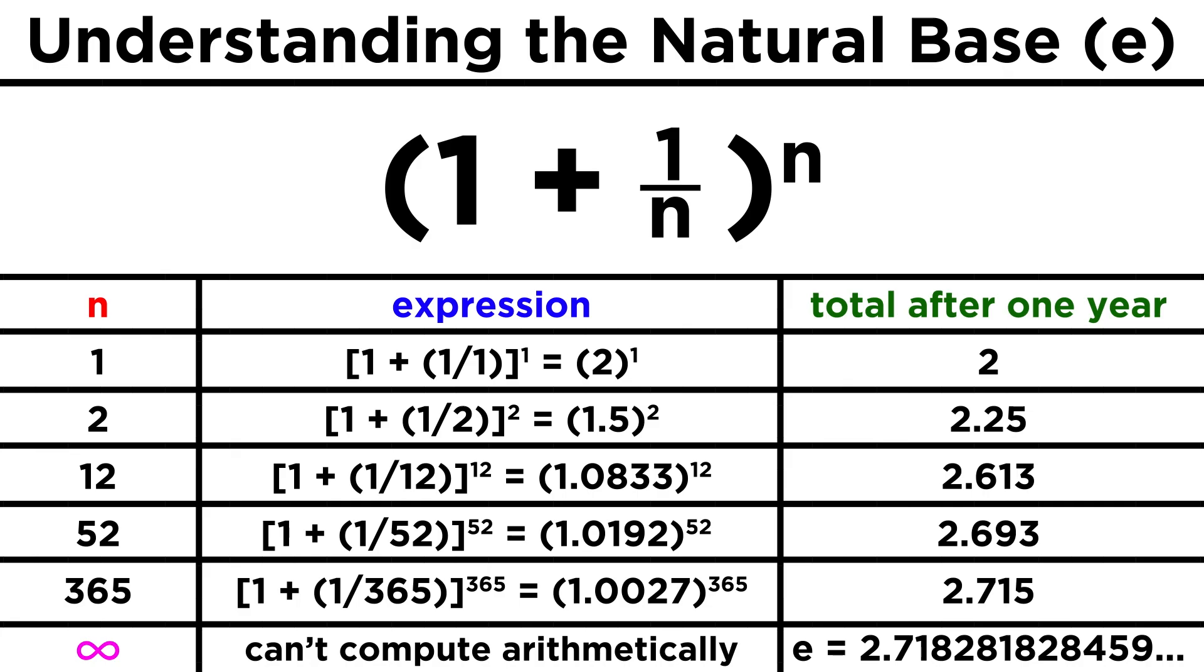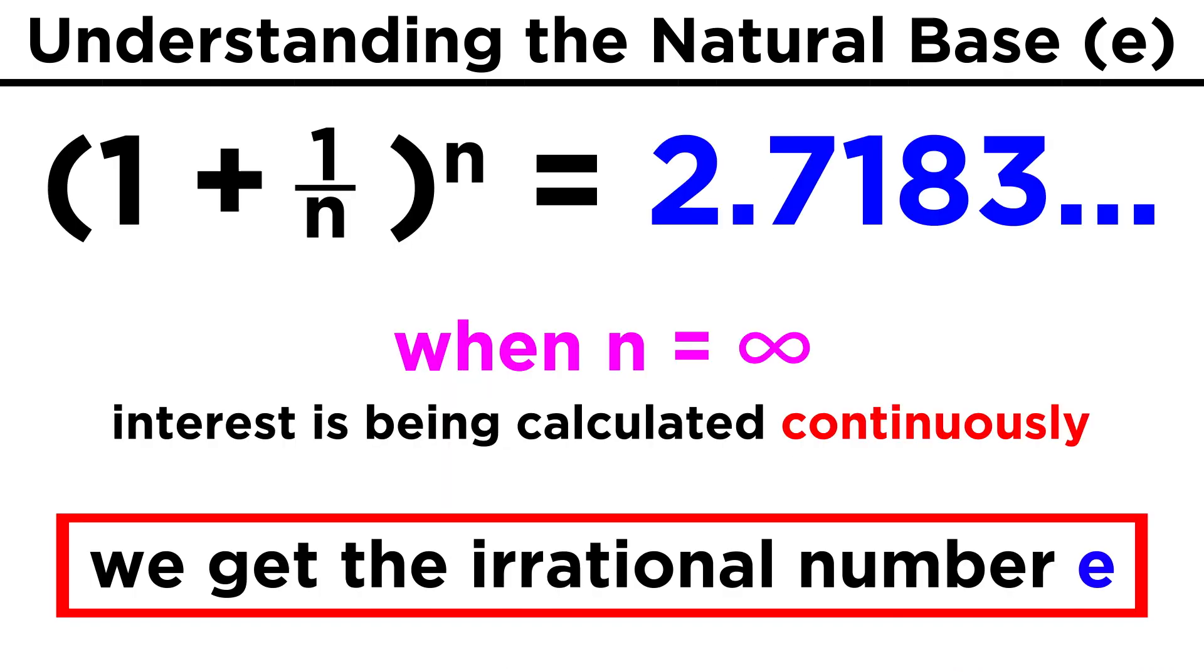The limit of this expression as n approaches infinity is called E, and it is approximately equal to 2.718. If n were equal to infinity, which would mean that interest was being calculated continuously every single instant, we would get precisely E.